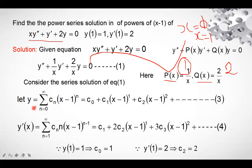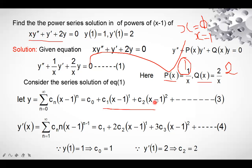Since x₀ = 1, we assume y = Σ (n=0 to ∞) cₙ(x − 1)ⁿ. Expanding by putting n = 0, 1, 2, … gives the series expansion (equation 1). Now we differentiate y to get y'.